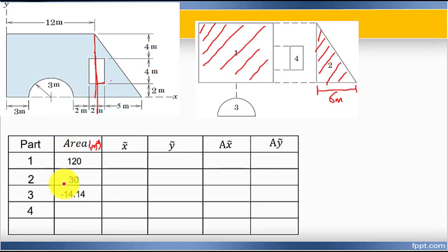If we substitute the value, the area equals one over two pi r squared, which equals 14.14. I put here a negative value why? Because this area is hollow.